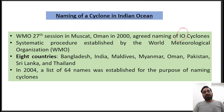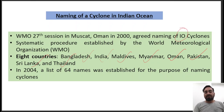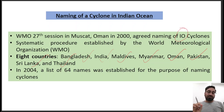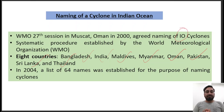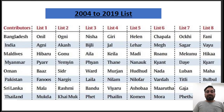In the Indian Ocean — be it the Bay of Bengal or the Arabian Sea — cyclones used to affect eight countries: Bangladesh, India, Maldives, Myanmar, Oman, Pakistan, Sri Lanka, and Thailand. These eight countries were put into a panel and each country was supposed to propose eight names. The countries were put in alphabetical order — Bangladesh first, India second, Maldives third, and so on. This naming system actually started in 2004, giving us 64 names in hand from the eight countries.